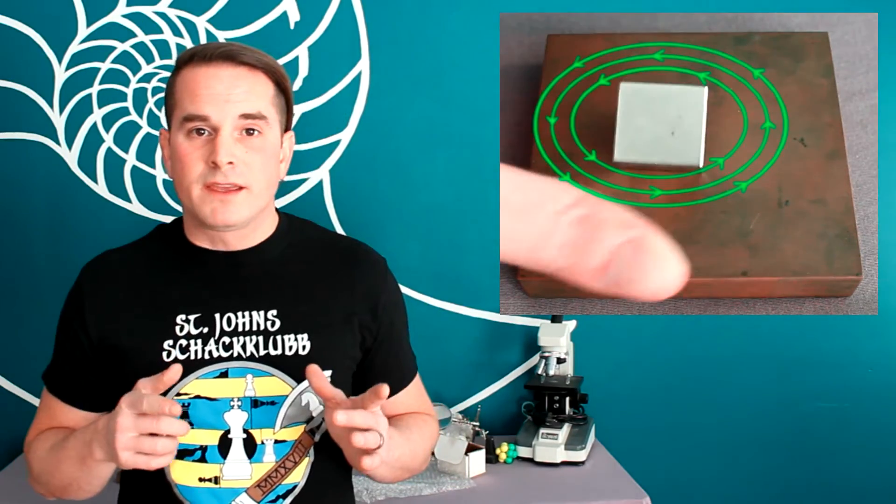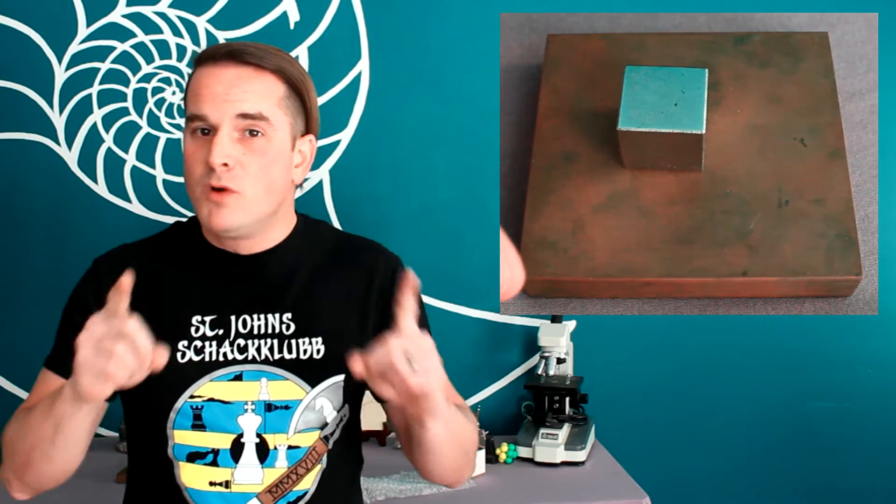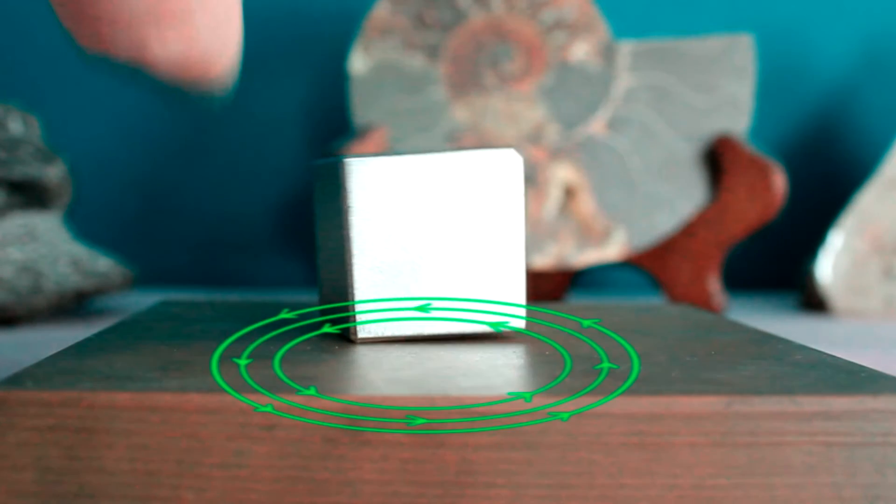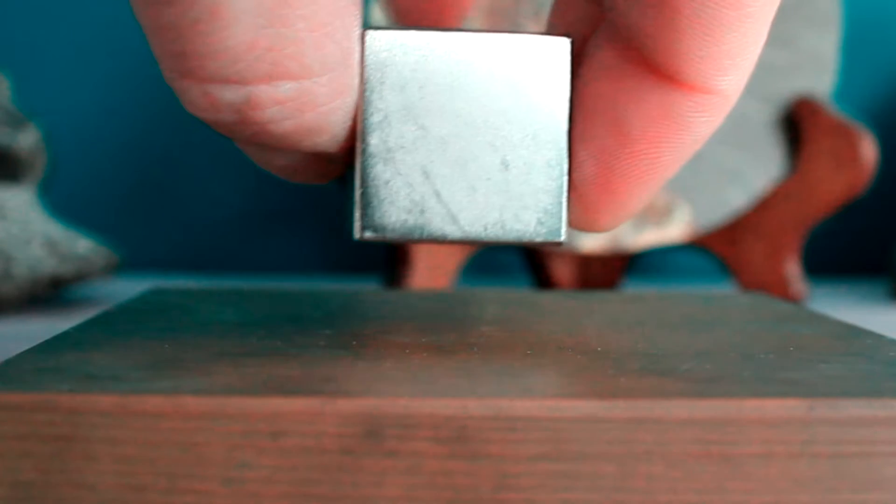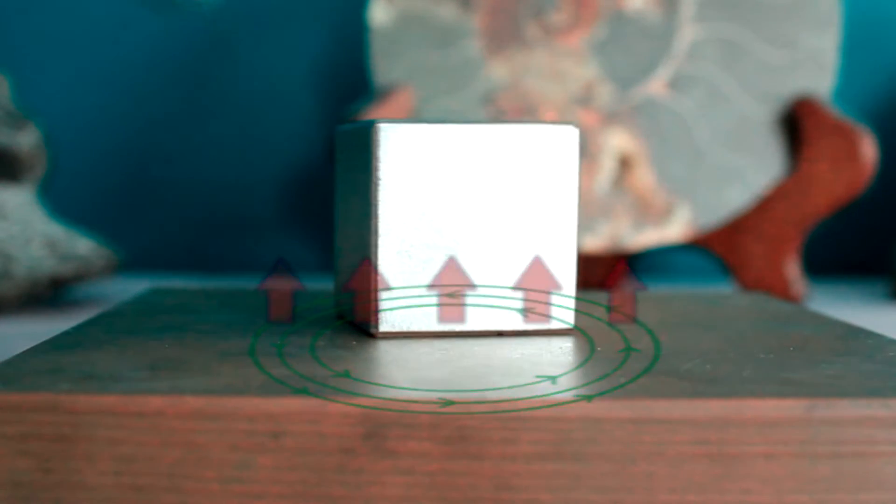But as soon as the magnet is moving, electrons in the copper are moving as well. And they're all moving in the same direction. And when that's happening, whether it's because I'm moving the magnet side to side or letting it fall closer to the copper, the copper is producing its own magnetic field.